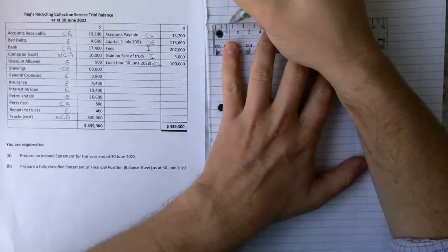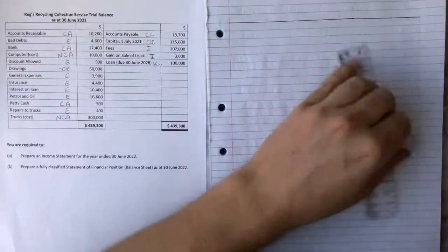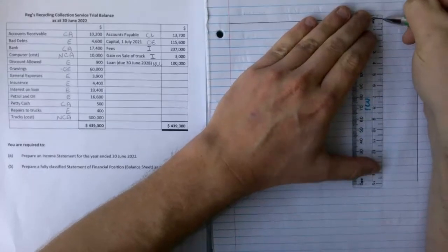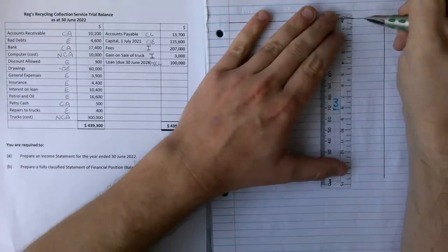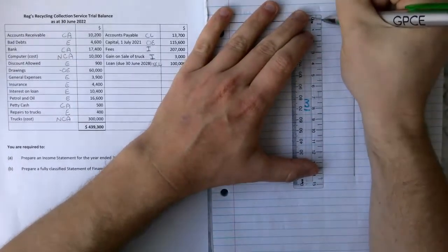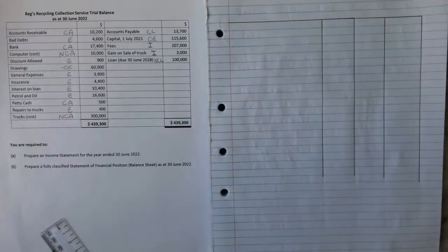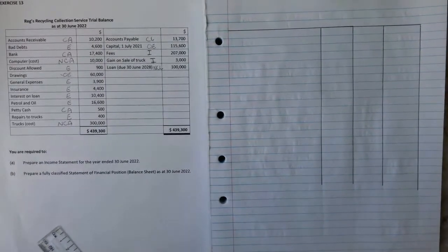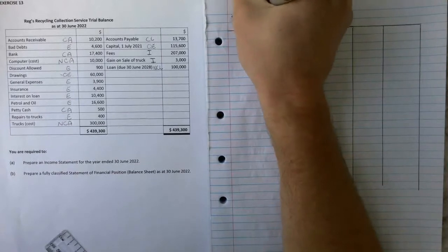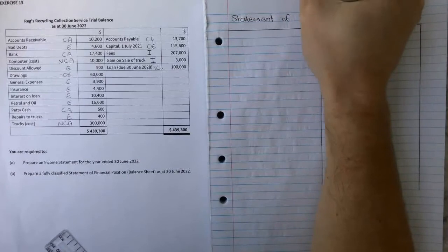As per an income statement, we're going to start the exact same way with, guess what, another title. There's two different titles you can do for a balance sheet. You can do number one which is a balance sheet for Regs Recycling as at the date, or the more sophisticated answer and the answer we would prefer you to write is a statement of financial position.